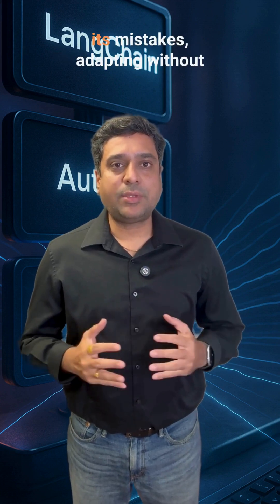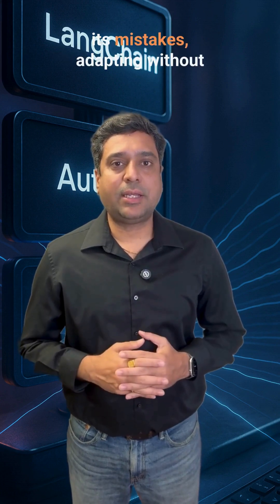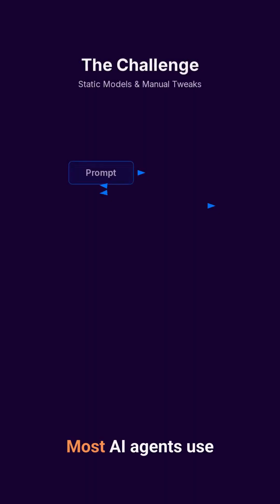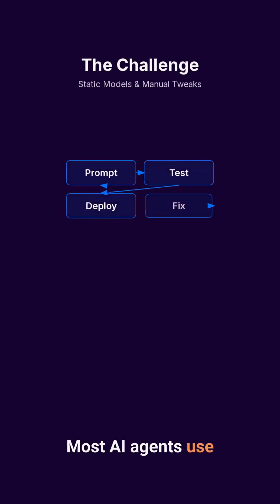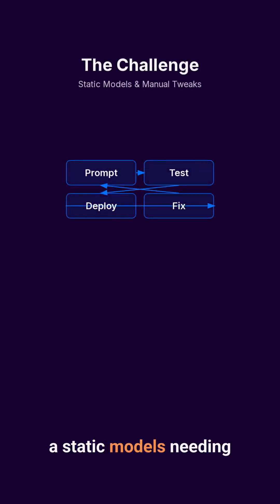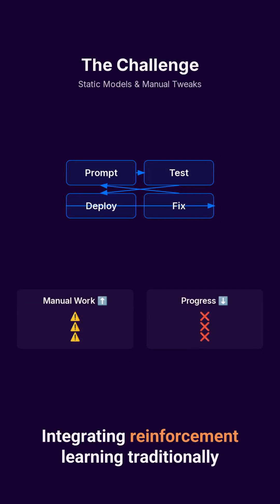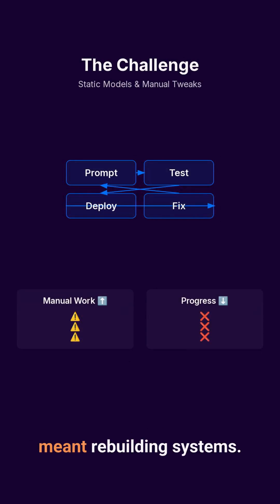What if your AI agent could learn from its mistakes, adapting without constant code tweaking? That's Microsoft's new Agent Lightning framework. Most AI agents use static models, needing manual prompt adjustments. Integrating reinforcement learning traditionally meant rebuilding systems.